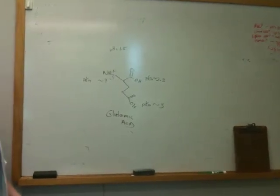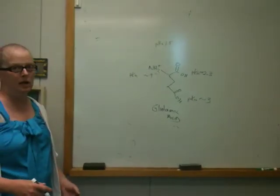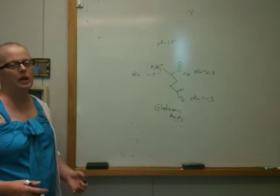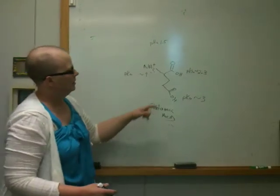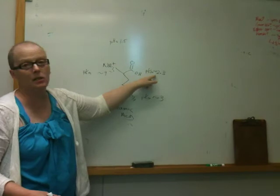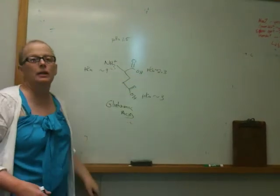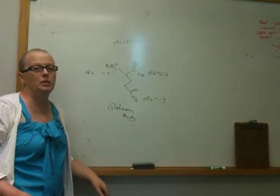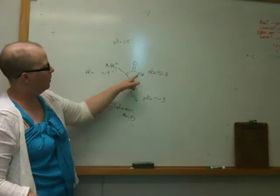So if I started raising the pH, what that means is that I'm adding hydroxide. As I add hydroxide, which proton is going to come off first? This proton is going to come off first because this has the lowest pKa. The carboxylic acid with the lowest pKa is the one that's the most acidic.